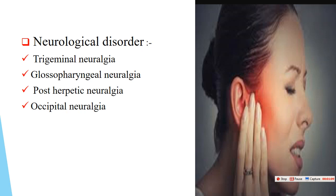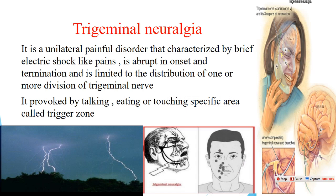The most common cause of neuralgia is this shooting or electrical-like pain. The most common type of neuralgia is trigeminal neuralgia. We can define trigeminal neuralgia as a unilateral painful disorder characterized by brief shock-like pain, abrupt in onset and termination, and limited to the distribution of one or more divisions of the trigeminal nerve, which has three divisions.